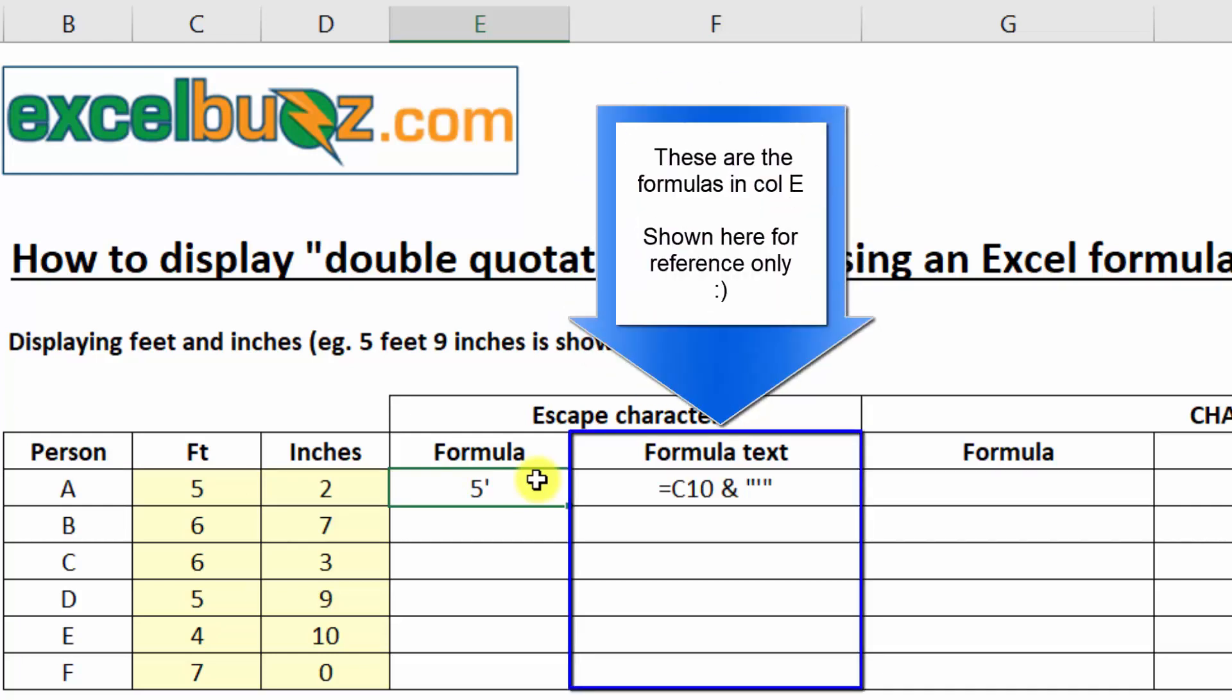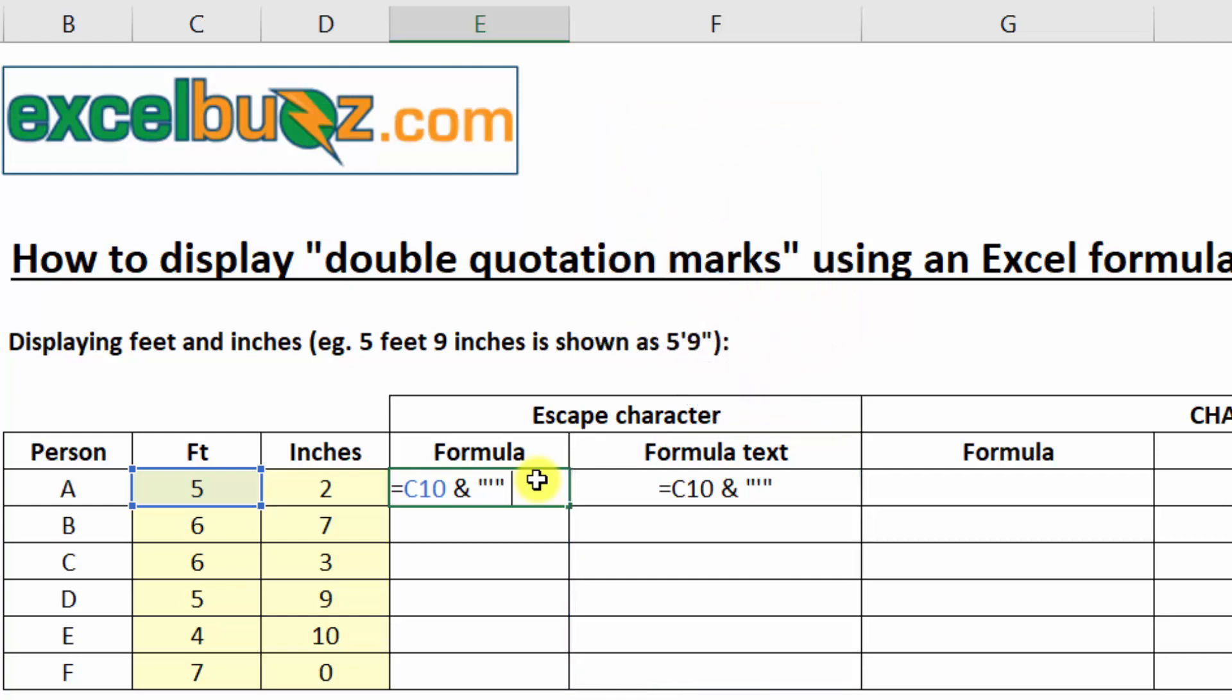So I'll press F2 to edit this cell, because we want to keep going. We need to add the two inches as well. So I'll add another ampersand or an and sign. And now I'm adding D10. Let's press Enter again.